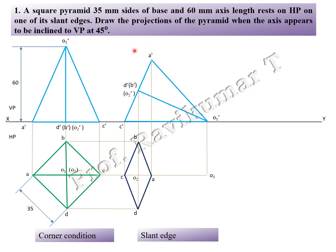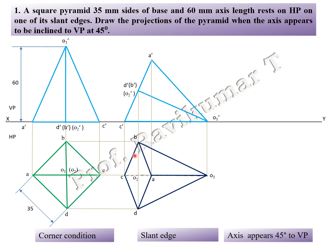When looking from the top of the object, all outer edges are visible, and the triangle face is completely visible. A, B, C, D — these four edges are completely visible, so draw with visible line. B to O is visible and D to O is visible. A to O is also visible. C to O is invisible, so we draw with invisible line — dotted line. C to apex is a dotted line.